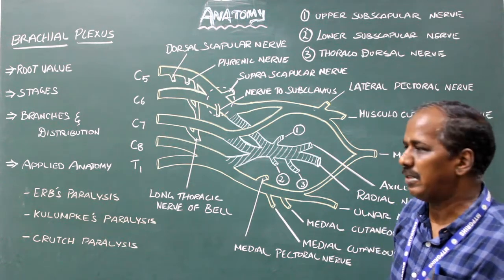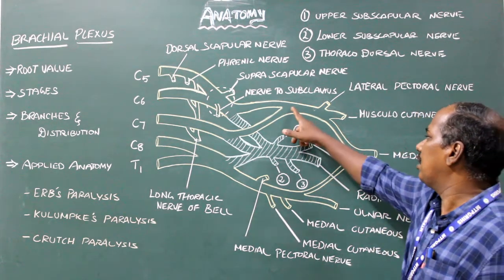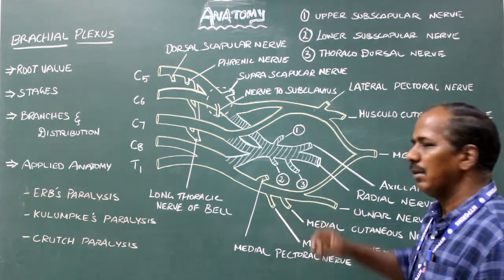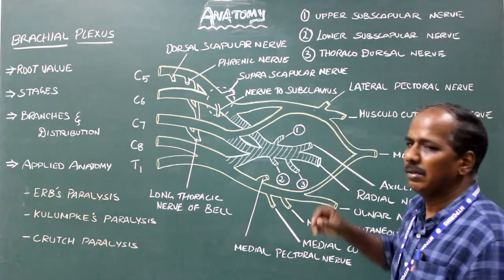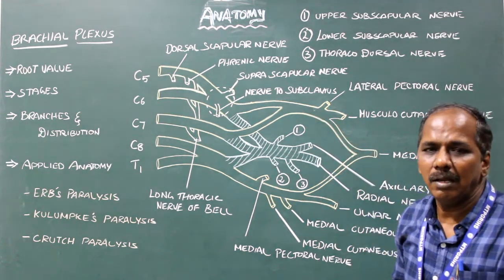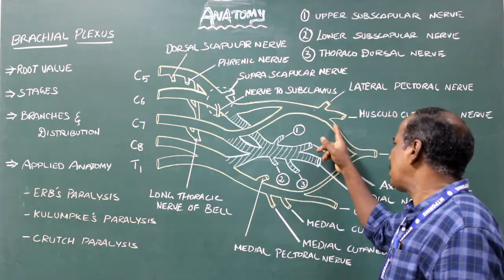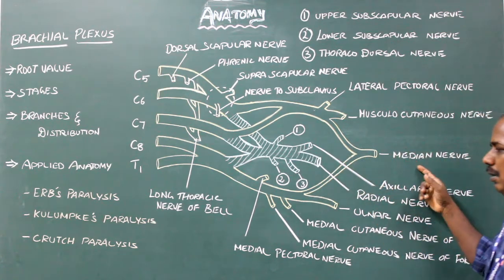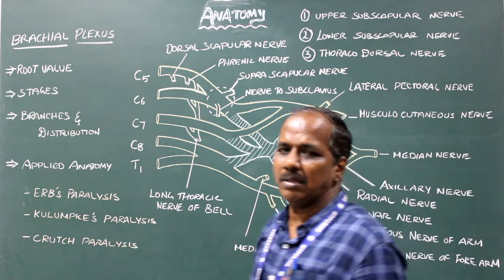Branches from the cord stage. From the lateral cord: number 1, lateral pectoral nerve; number 2, lateral root of median nerve; number 3, musculocutaneous nerve.